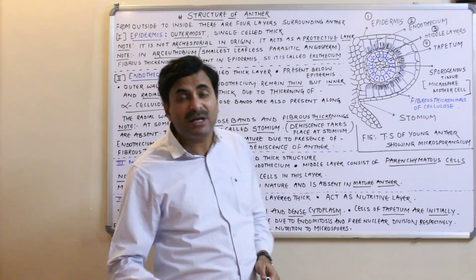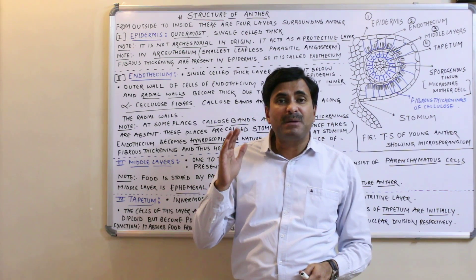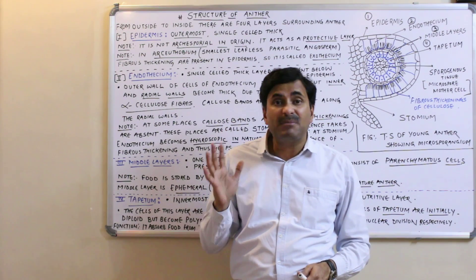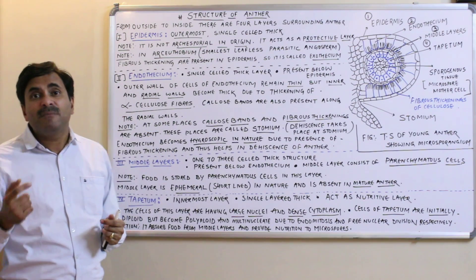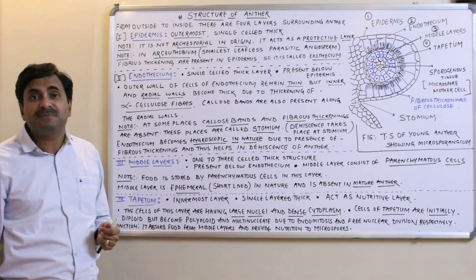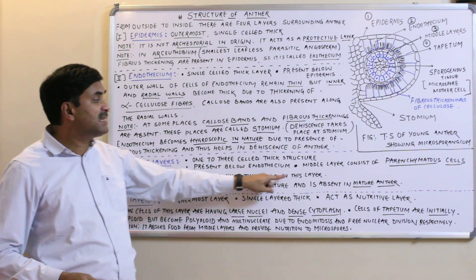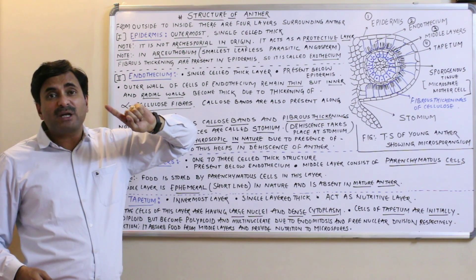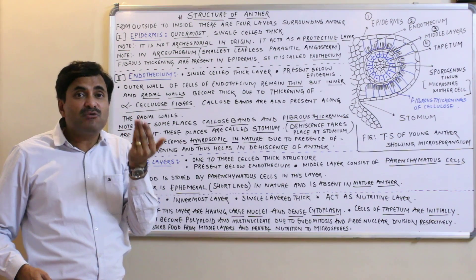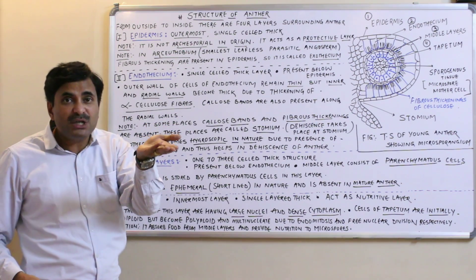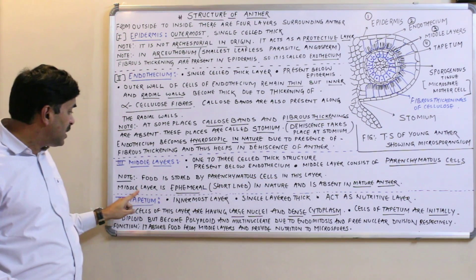Though the tapetum is nutritive in function and provides nutrients to the developing microspores, the tapetum layer takes its nutrition from the middle layers. At the time of maturity, the middle layers disintegrate and provide nutrition to the tapetum, which in turn provides nutrition to the microspores. Food is stored by the parenchyma cells in this layer.